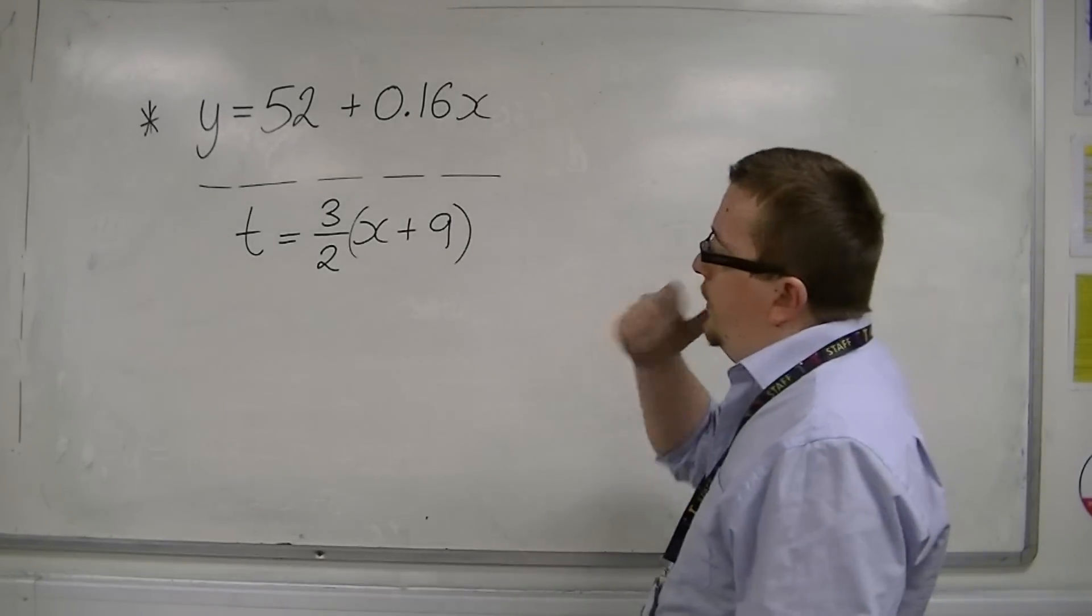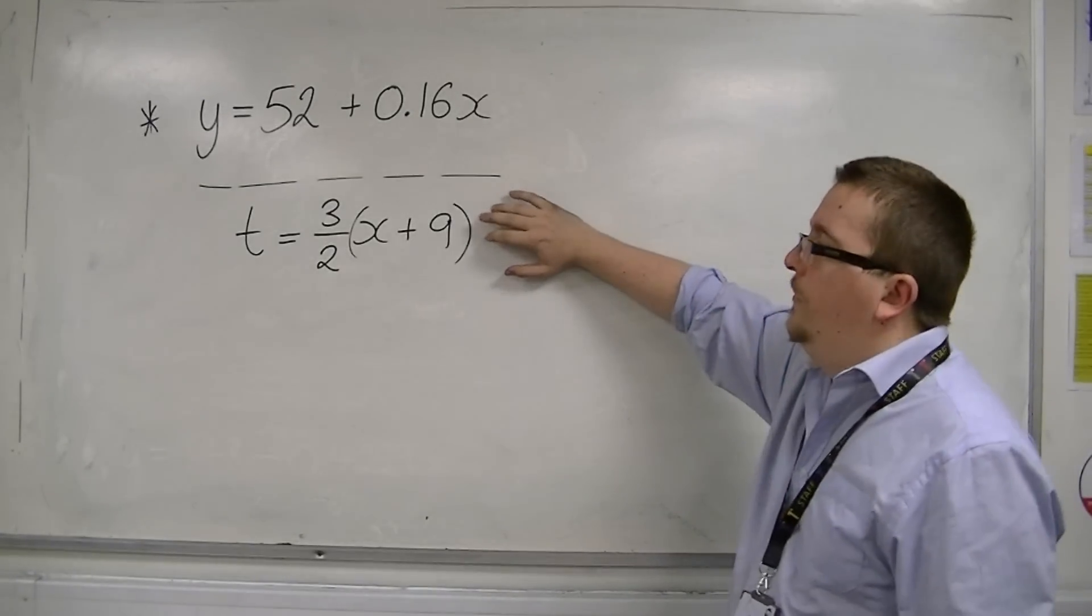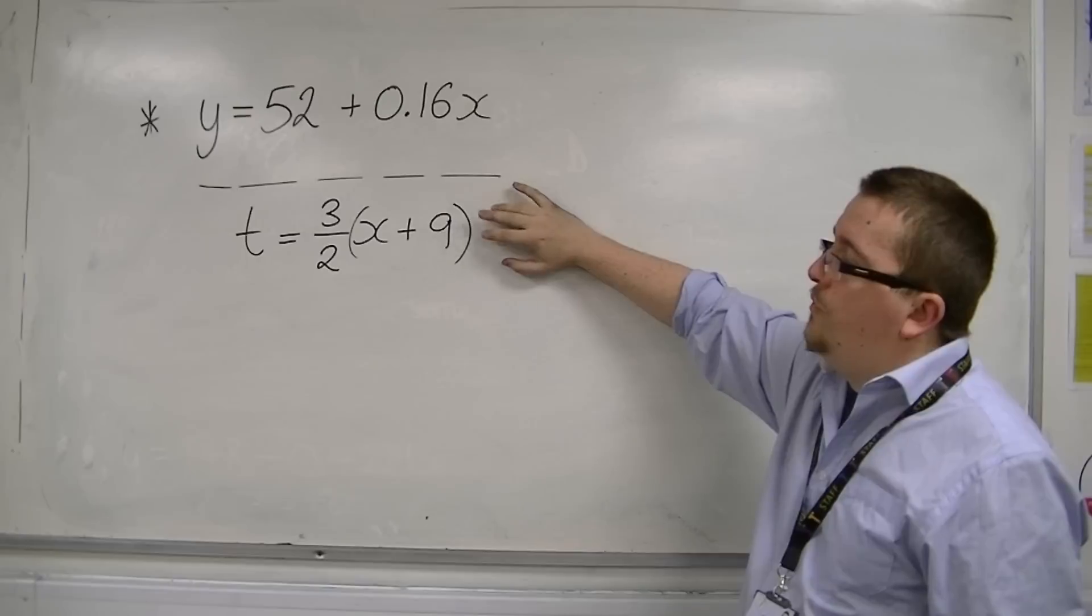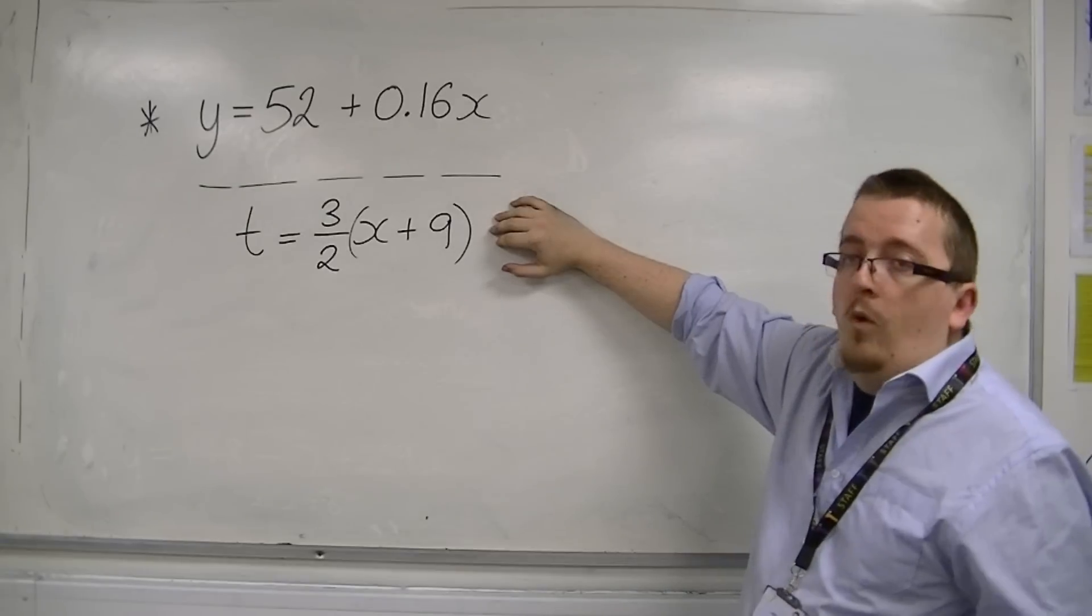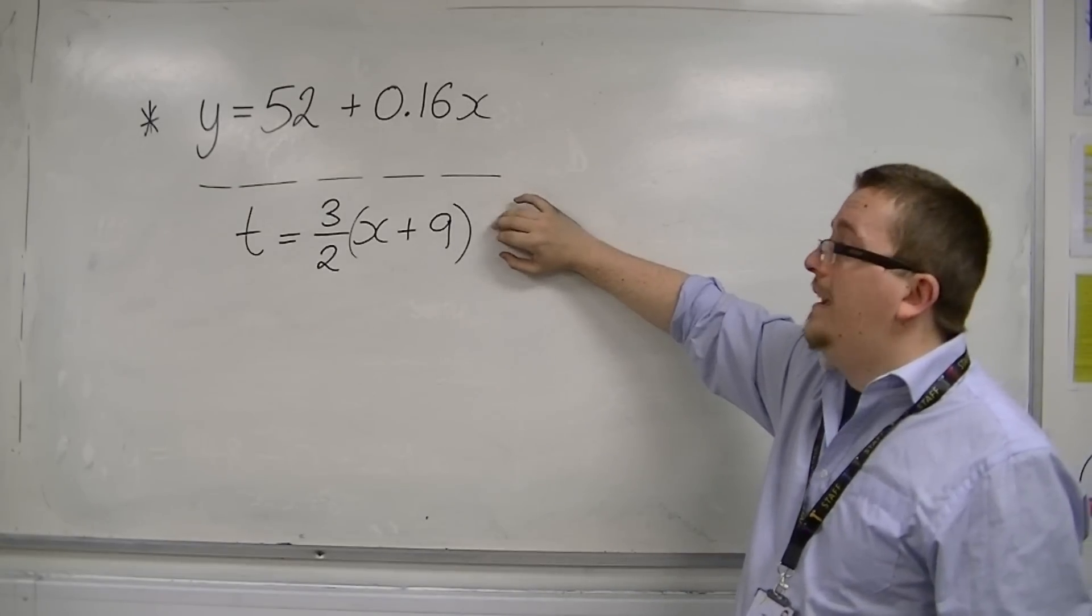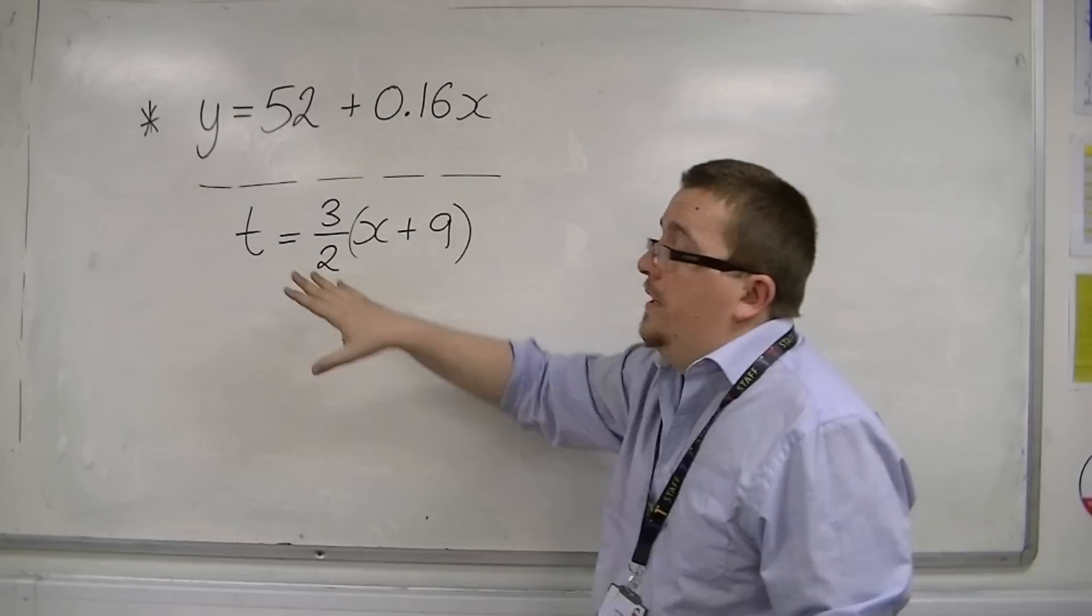Let's say that the conversion that we're going to use, the scaling, is t equals three halves x plus 9. And I want to then know what would be the least squares regression line in that case when we're looking at y and t.